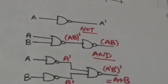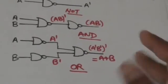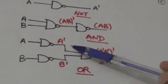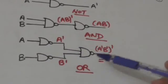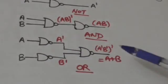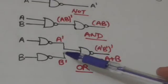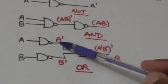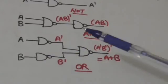Now look at how we can implement OR operation by NAND gates. Look at this circuit here — the output of this NAND gate is A complement, and the output of this NAND gate is B complement.